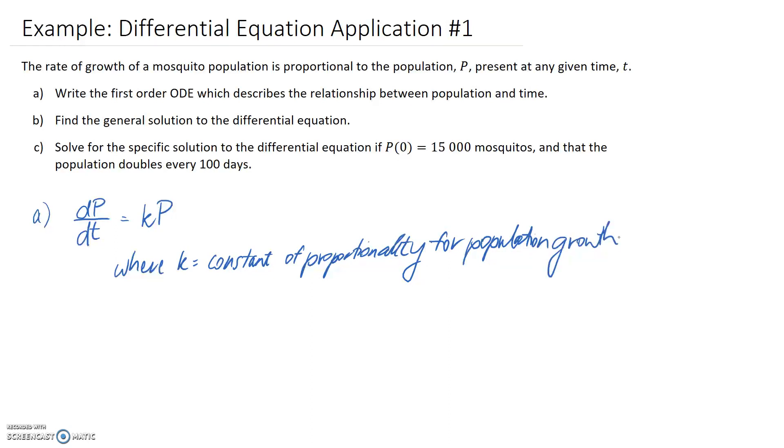That finishes part a. The only other thing to mention is that we've left this as positive kP. If it was talking about the rate of decay of the population, you'd make this negative because the rate is going downwards. Moving on to part b.